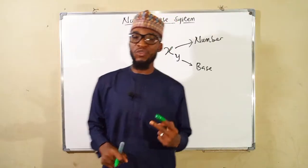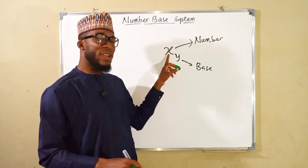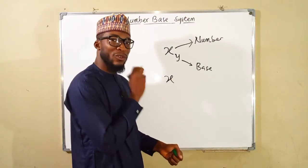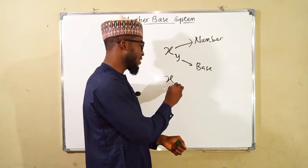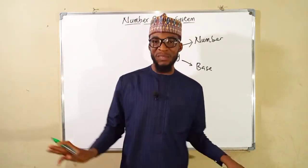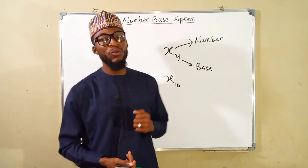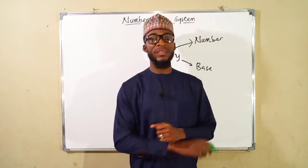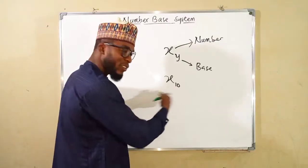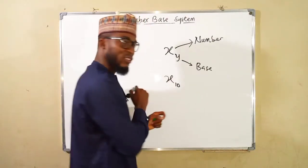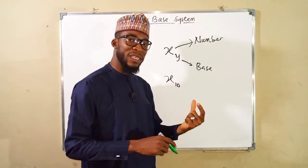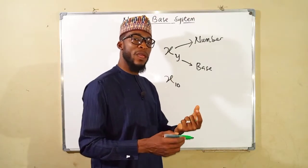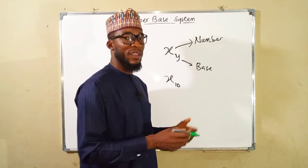There are two important things you need to know. First, any number without an assigned base is in base 10, naturally. Second, the highest digit in any number base is one less than the base itself. So if you are talking about numbers in base 10, you will never see 10 within the range. In base 9, you can only see numbers from 0 to 8. In base 7, you can only see numbers from 0 to 6.